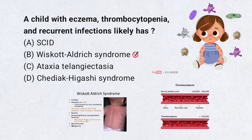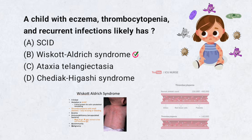Wiskott-Aldrich syndrome is a rare X-linked genetic disorder characterized by a triad of symptoms: eczema, thrombocytopenia, and recurrent infections. It is caused by a mutation in the WAS gene, which plays a crucial role in immune cell function.